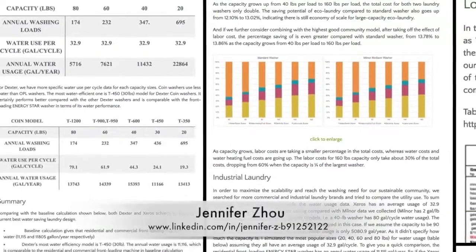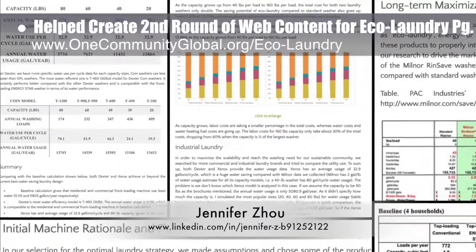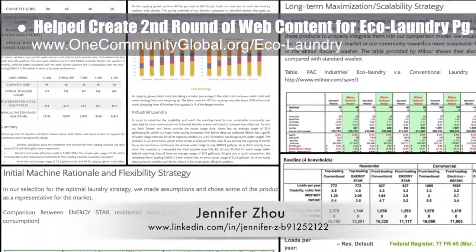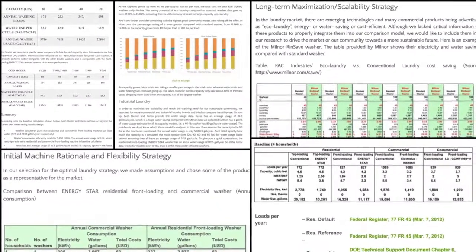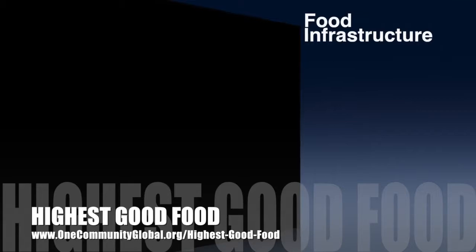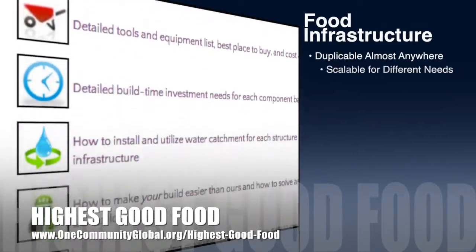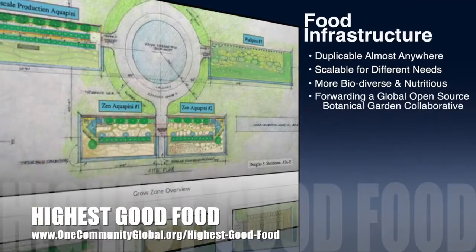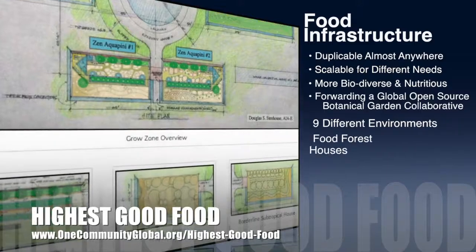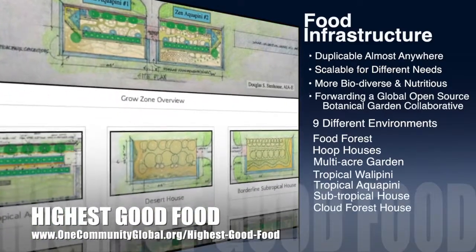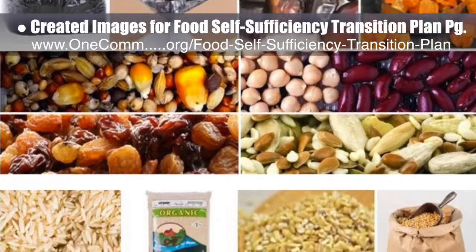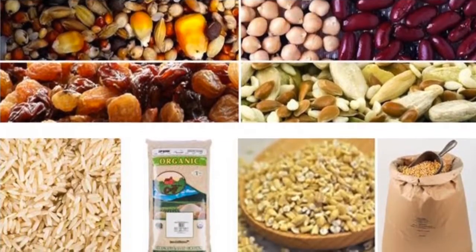Jennifer Zhao, web designer, helped with her second round of website content for the eco-laundry page, updating the text formatting, replacing all images with higher quality ones, and adding click to enlarge options whenever needed. One Community's approach to highest good food is duplicable almost anywhere, scalable for different needs, more biodiverse and nutritious, part of forwarding a global open source botanical garden collaborative, and includes nine different free shared and duplicable growing environments. This week, the core team created three additional new header images for the food self-sufficiency transition plan page for the bulk goods sections.